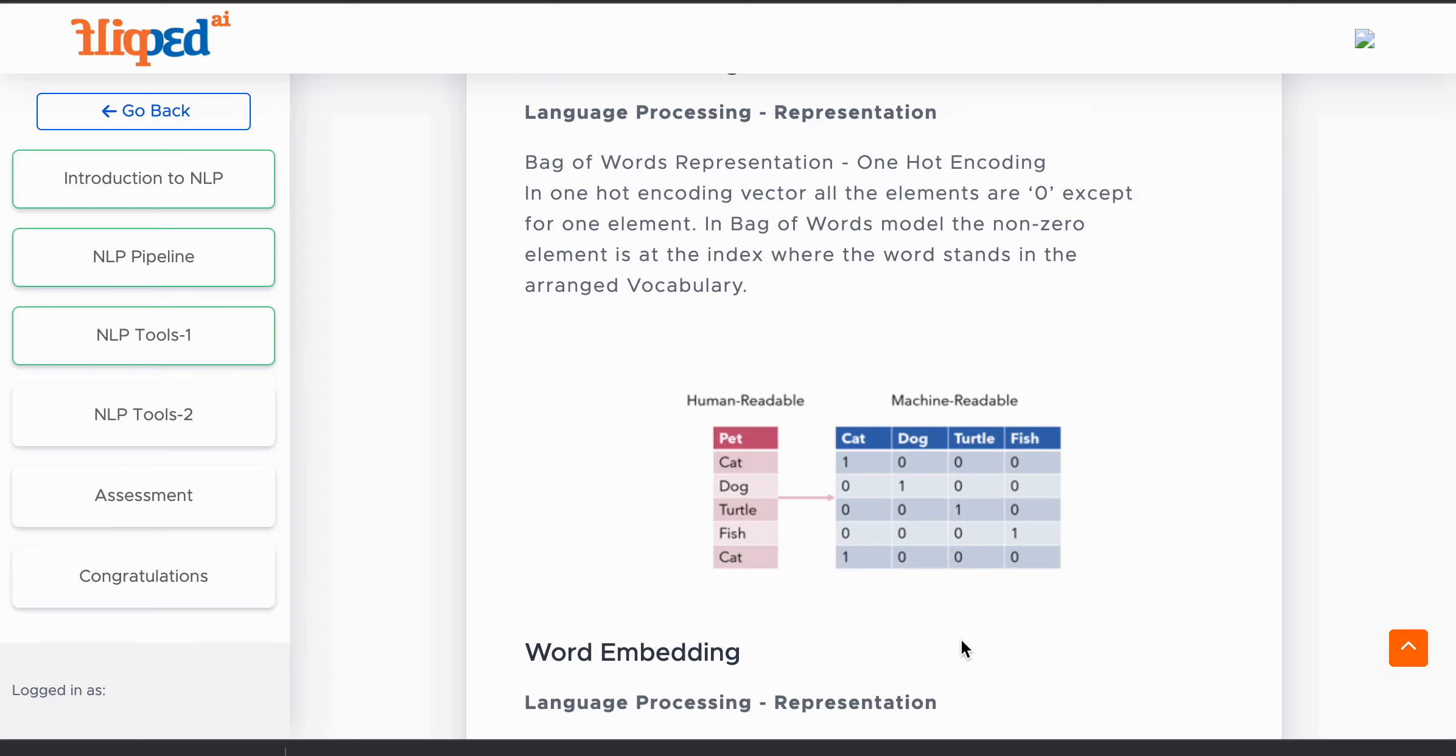For the first data, cat, it is represented as 1 in the first index and the rest are zero. Like the same way, dog is represented as 1 in the second index of the second row and the rest are zero.